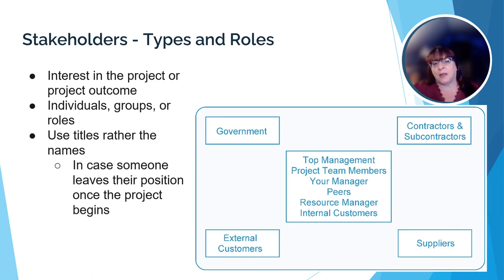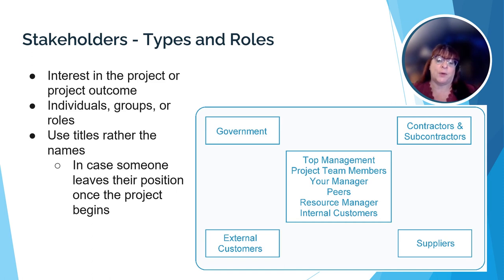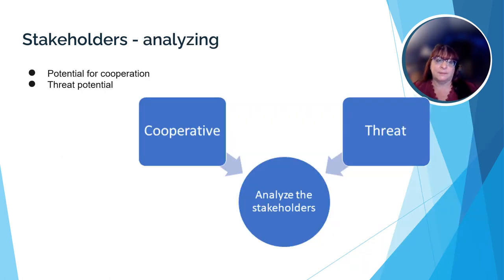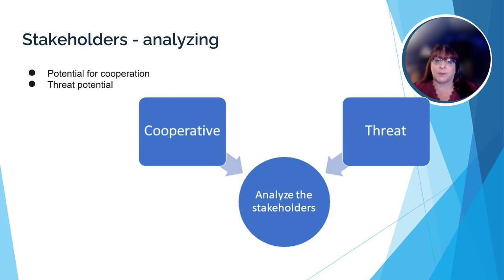When identifying the stakeholders, try to use the title of the stakeholder rather than the name of the individual. Just in case the individual leaves their role, there isn't a need to update the stakeholder list and all the relevant information with the new person's name, as long as the duties assigned to the title don't change. While we're preparing the stakeholder list, we need to analyze what they will bring to the project. We identify stakeholders who are available to help with different aspects of the project, such as the company financial officer or human resource manager.